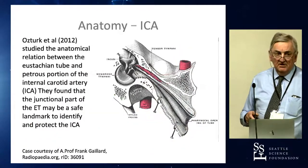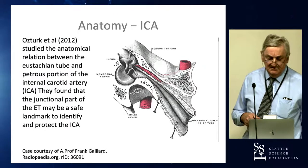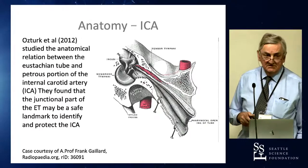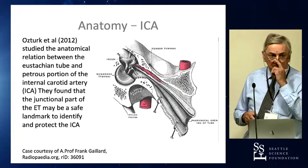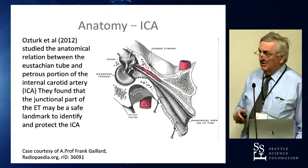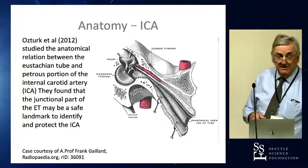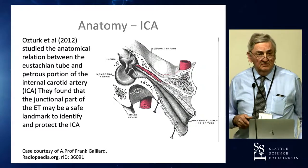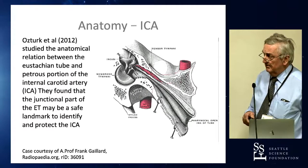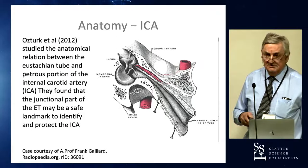One interesting process from the surgical point of view is the relationship with the internal carotid artery, just at the junction of the isthmus, the bony and cartilaginous process. So it is important that if people are putting instruments in there, there is more than a theoretical risk of damage to the internal carotid artery. There are well-recognized anecdotal cases of dehiscence of bone and things.